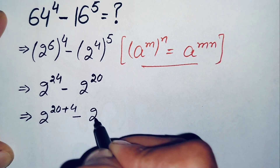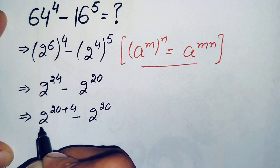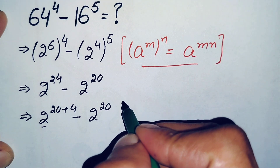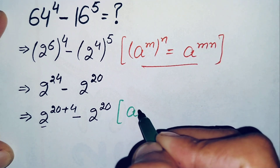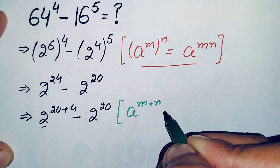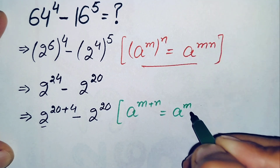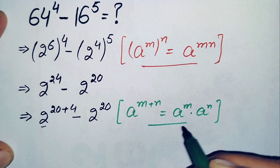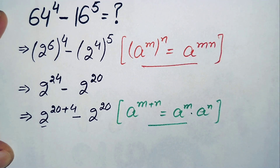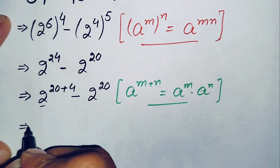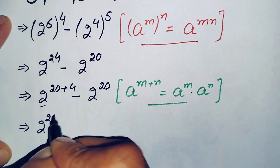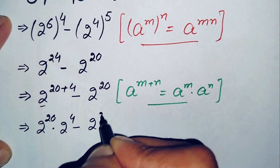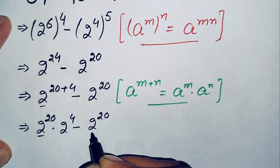Minus 2 raised to power 20. Here in this one term we will use another exponential math property: a raised to power m plus n, which can also be written as a raised to power m times a raised to power n. Using this property, the term becomes 2 raised to power 20 times 2 raised to power 4, minus 2 raised to power 20.